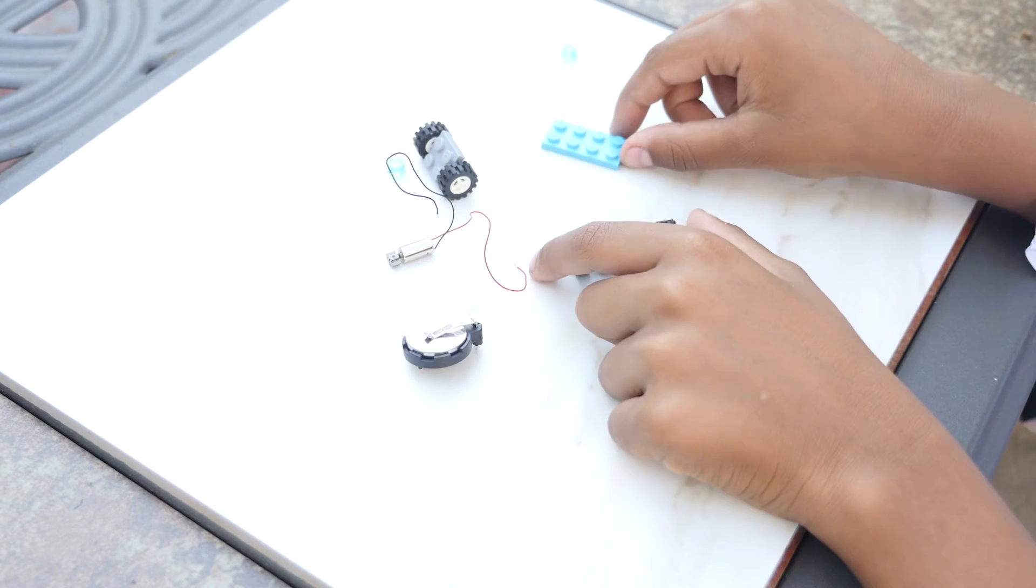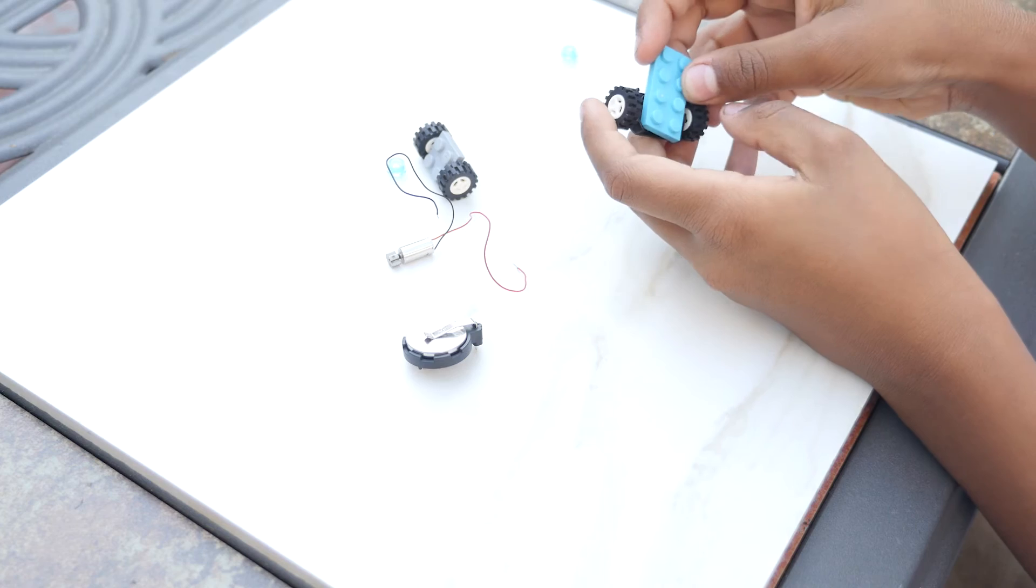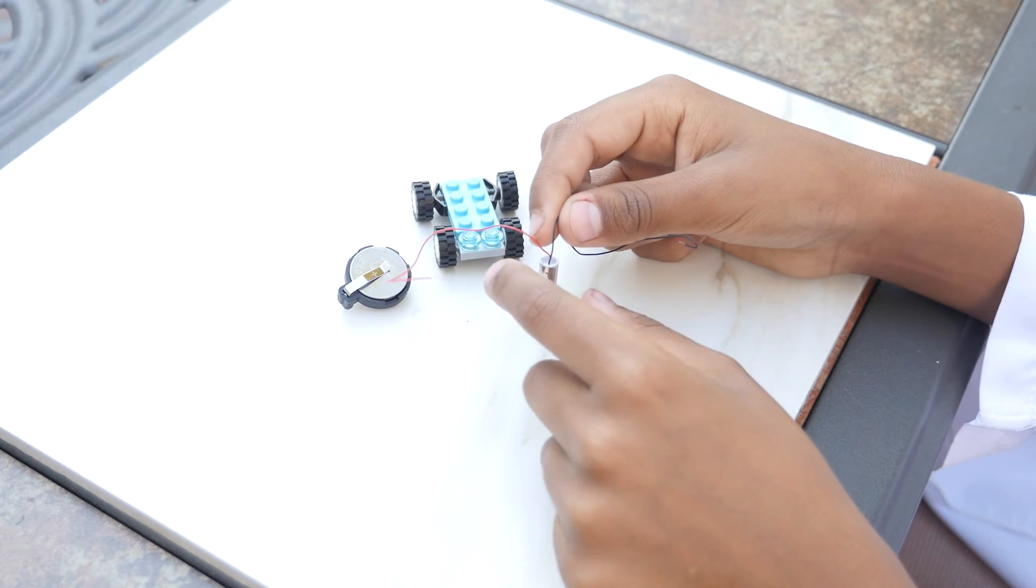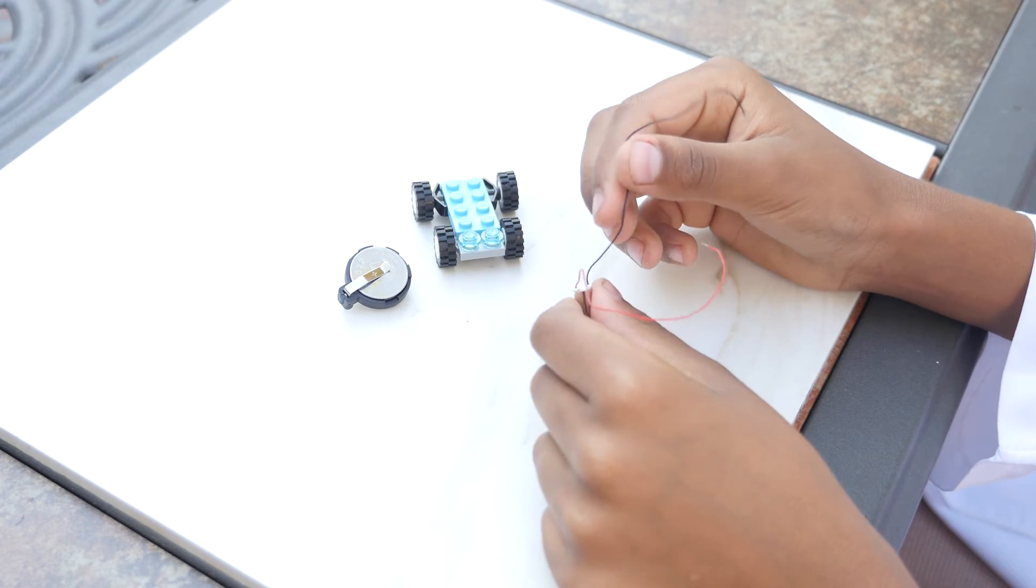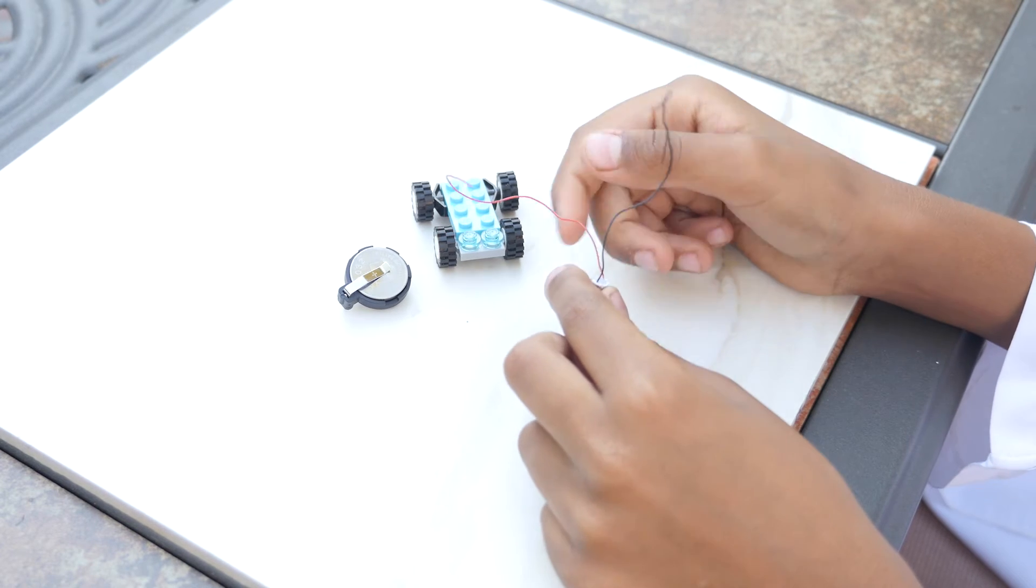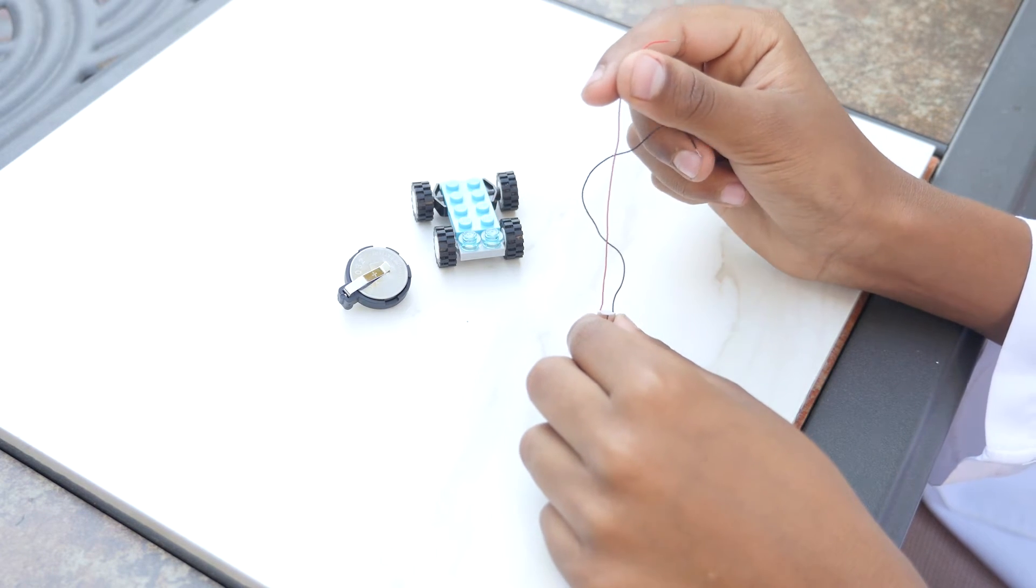So first we're going to build the LEGO car. Every motor has a positive and a negative side. Usually the black or blue is positive, and the red or shade of red is negative.